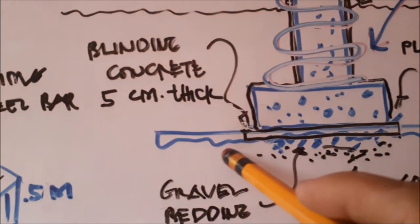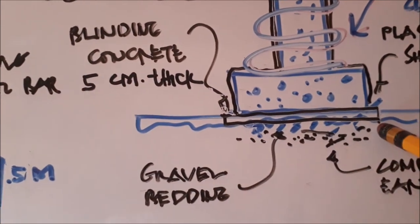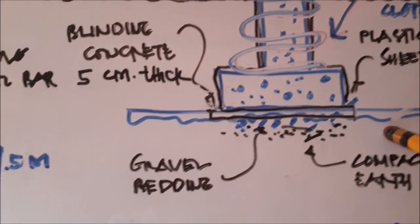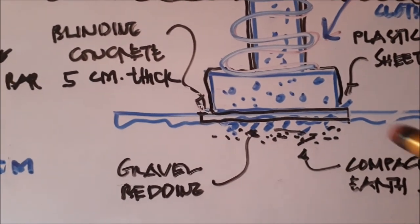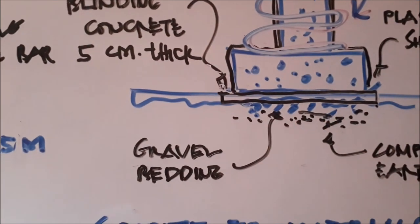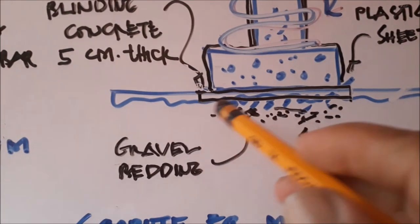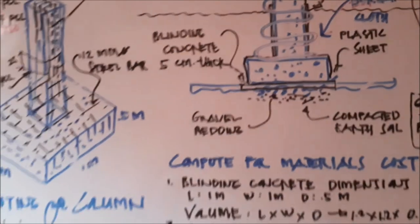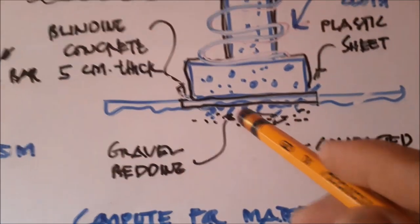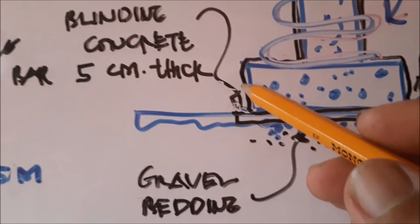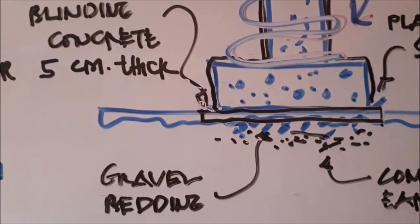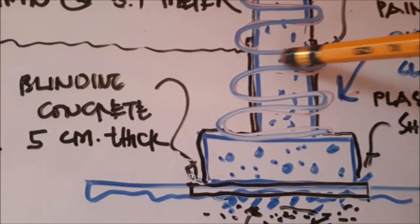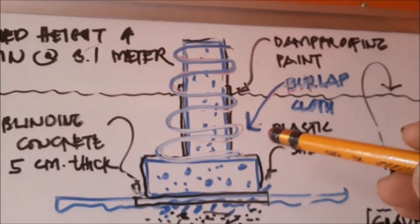After ng pag-ukay para sa footing, nilalagyan po natin ng gravel bedding. Pero bago ang gravel bedding, dapat compacted muna ang soil para firm ang foundation kung saan ilalatag ang footing. Meron pong gravel bedding — eco-compacted iyan. Bago natin latagan ng blinding concrete — 5 cm ang kapal ng blinding concrete. After that, nilalagyan po ng plastic sa ibabaw ng blinding concrete bago tayo magbuhos ng footing.